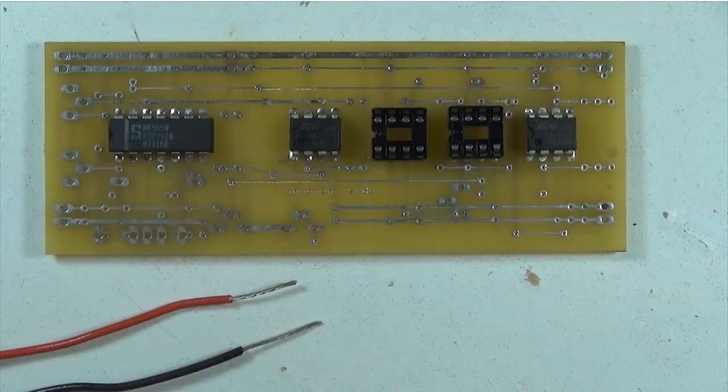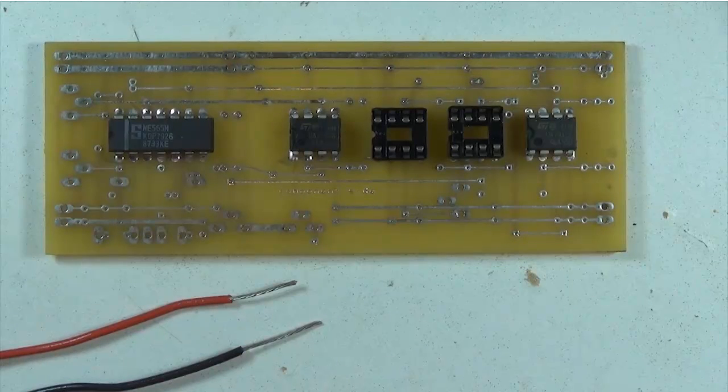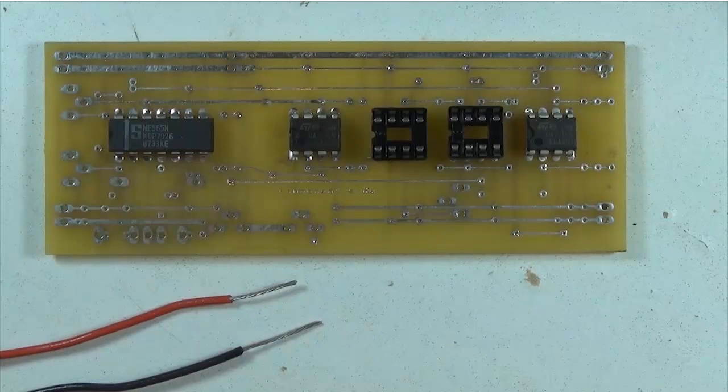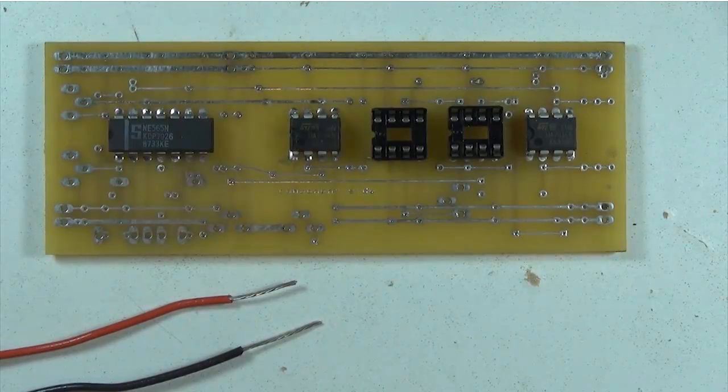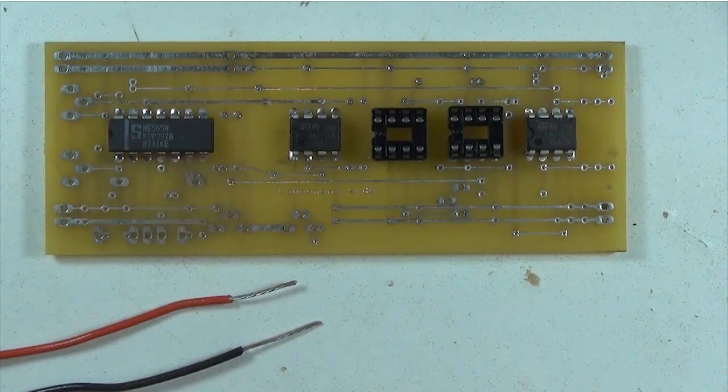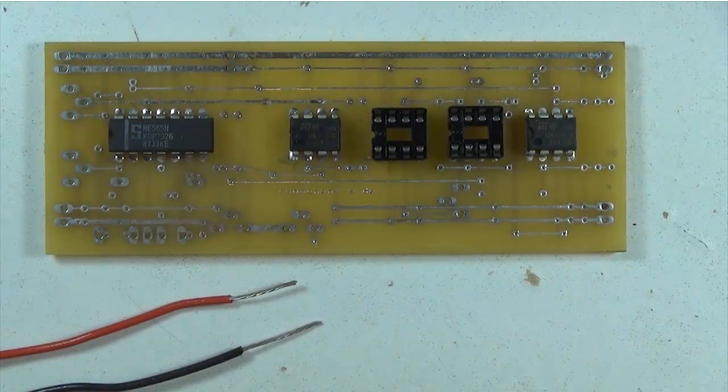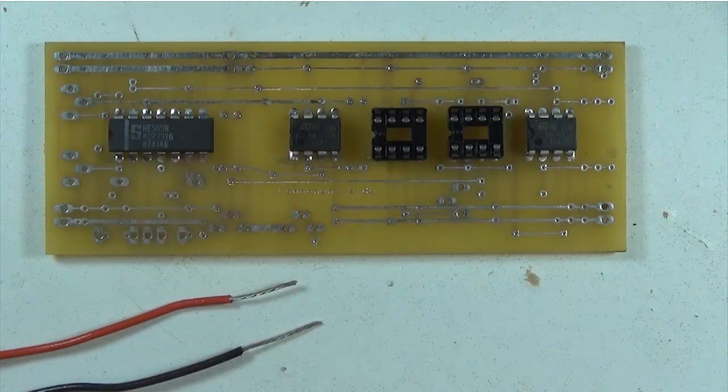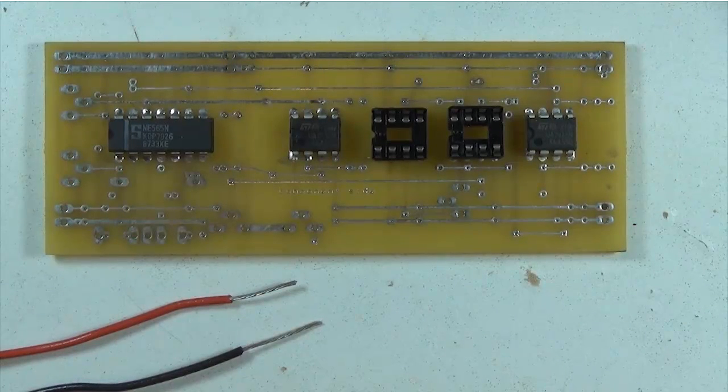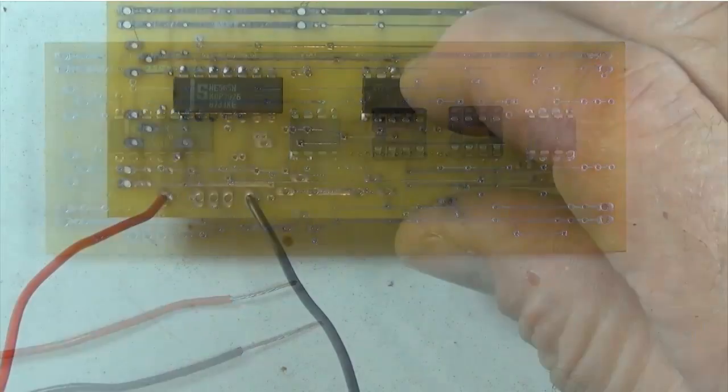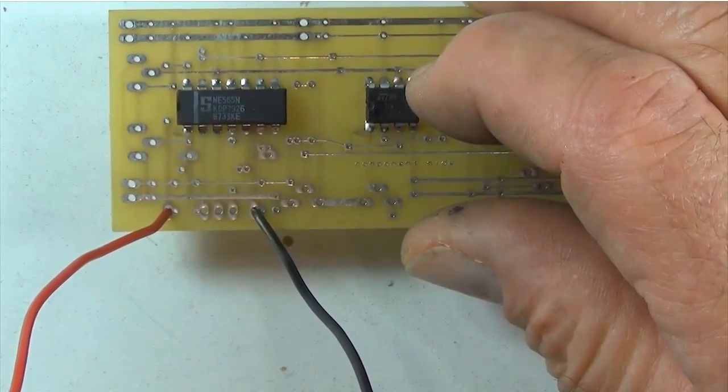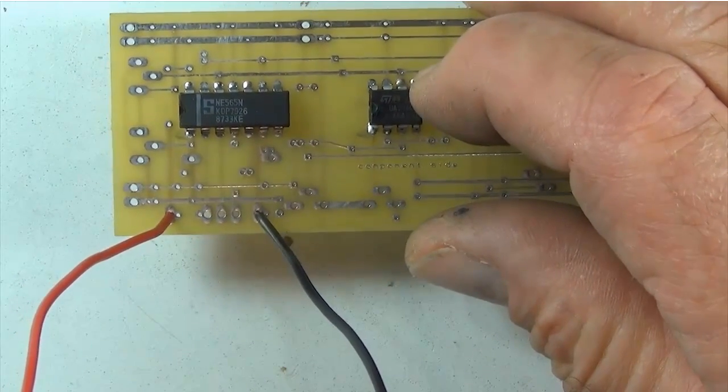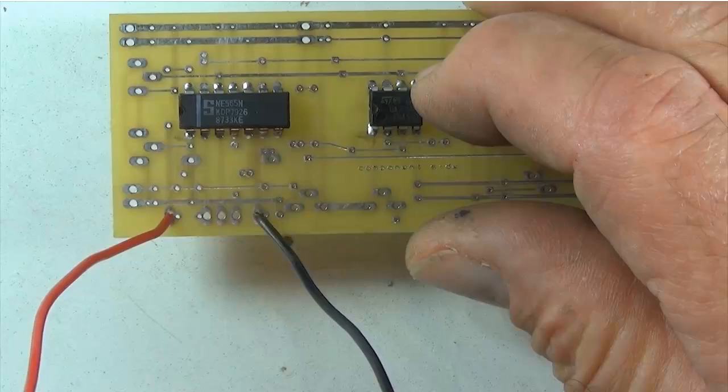Now let's solder the wires into the printed circuit board. Again, I'm always going to use stranded wire because it's a lot more flexible and it will allow for a little more bending and movement within a chassis or whatever you're building. We'll always insert the wire on the component side of the printed circuit board.